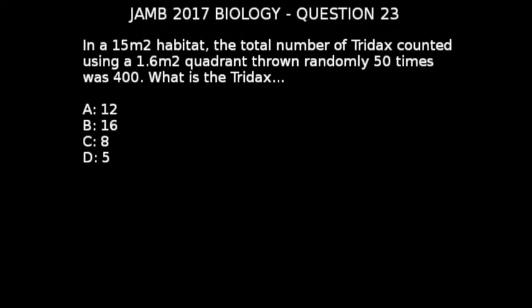JAM 2017 biology question 23. In a 15 meter square habitat, the total number of tridas counted using 1.6 meter square quadrants thrown randomly 50 times was 400. What is the tridas? Options: A) 12, B) 16, C) 8, D) 5.